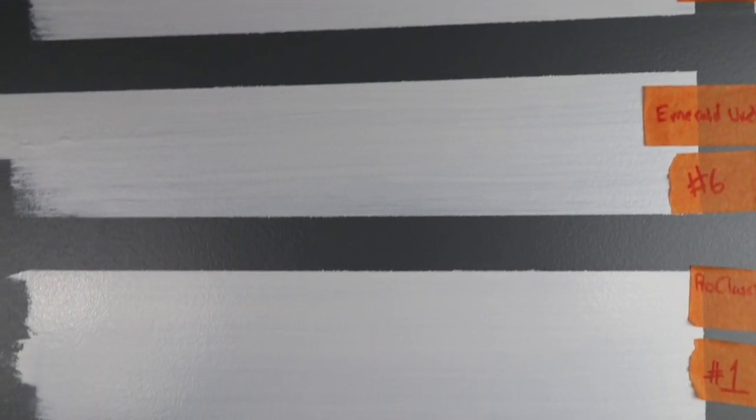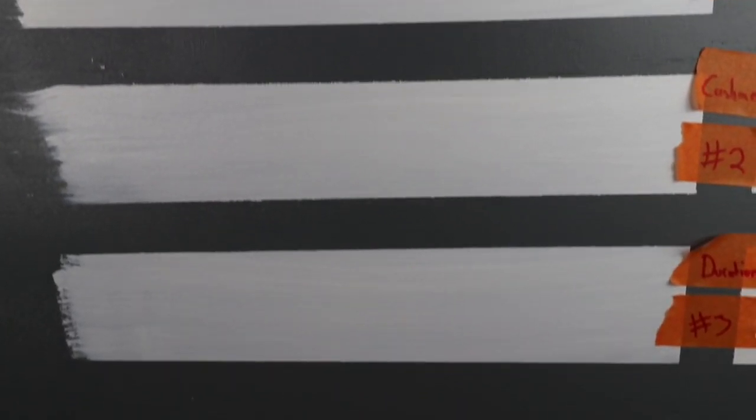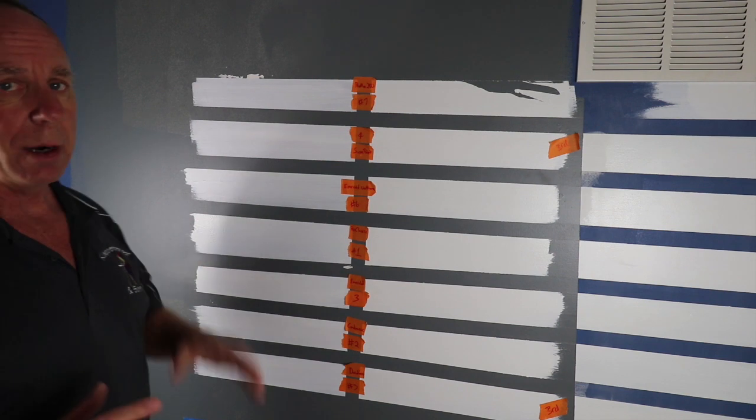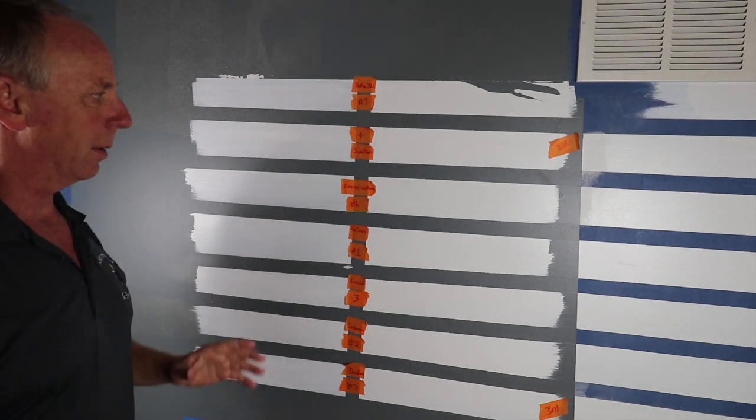Maybe the Emerald and the Pro Classic came in second place. I can easily say the Promar 200 and the Emerald Urethane both had the worst coverage. Doesn't mean they're a bad paint, just means that if you're looking for coverage, these aren't the paints you want to buy.